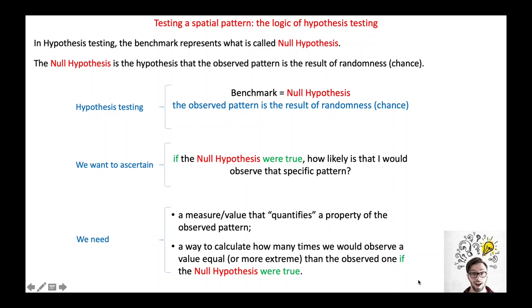According to the logic of hypothesis testing, the pattern we observe must be set against the benchmark represented by the null hypothesis. Given the null hypothesis, we may want to test how likely the observed pattern would be if the null hypothesis were true. To put this into practice, we have to find a measure that quantifies the property of the pattern we observe, and we also need to calculate how many times we would observe a quantity equal or more extreme than the observed one if the null hypothesis were true.